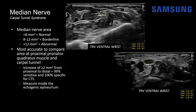That measurement should be made inside the echogenic epineurium, which is the surrounding echogenic connective tissue. In this case, at the proximal wrist at the pronator quadratus, the median nerve area measures 7 mm² — within normal range. When we measure the maximal dimension in the carpal tunnel more distally, the area is 10 mm², which falls in the borderline range on its own. But comparing the caliber change, that's an increase of 3 mm², which is consistent with carpal tunnel syndrome — and indeed that's what the patient presented with clinically.